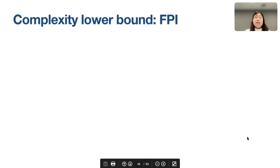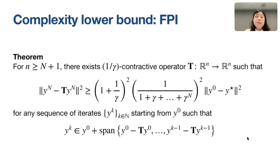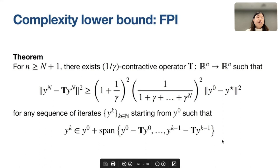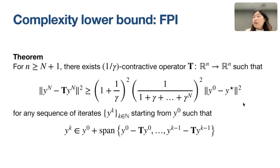We have also shown that OC-Halpern is exactly optimal. We construct a (1/γ)-contractive operator T such that for any sequence of iterates satisfying the linear span assumption — which includes KM and Halpern — the fixed point residual cannot be smaller than the right-hand side. This right-hand side matches exactly the convergence rate of OC-Halpern, so we conclude OC-Halpern is an exactly optimal method.